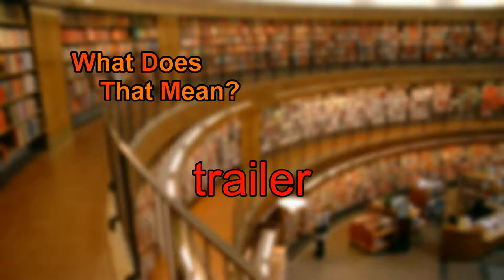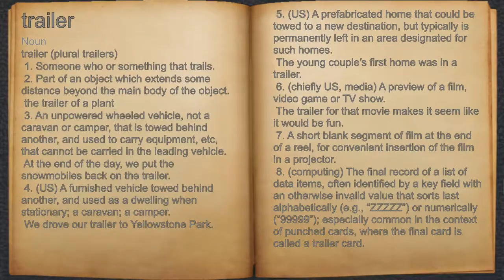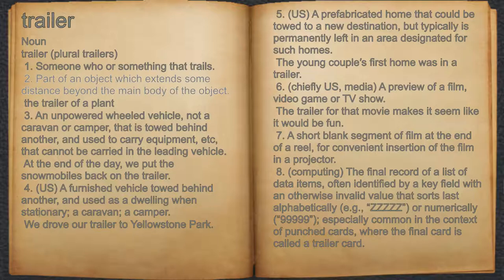What does trailer mean? Trailer. Noun. 1. Someone who or something that trails. 2. Part of an object which extends some distance beyond the main body of the object. For example, the trailer of a plant.